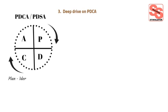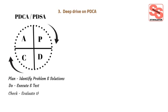The four steps are: Plan — identify a problem and possible solutions; Do — execute the plan and test the solutions; Check or Study — evaluate the results and lessons learned; and Act — improve the plan or process for better solutions.